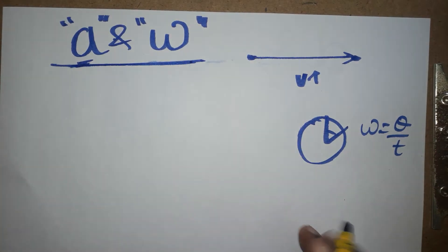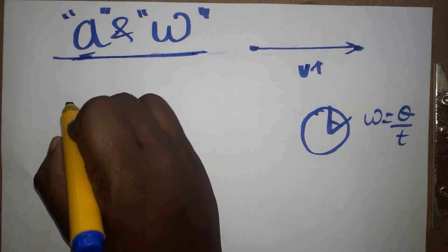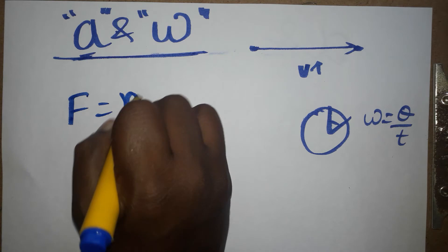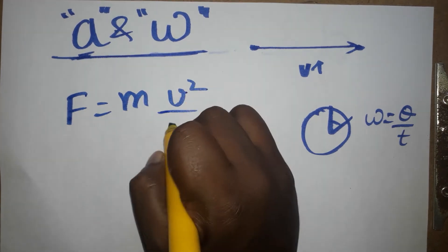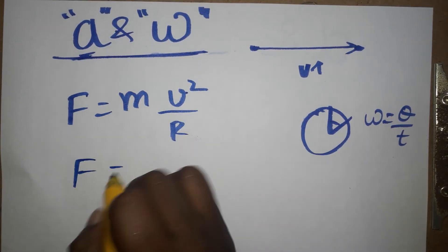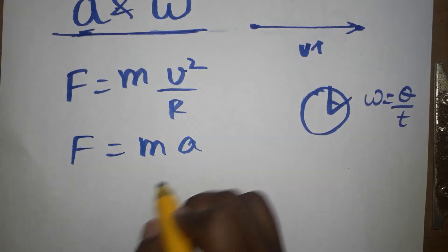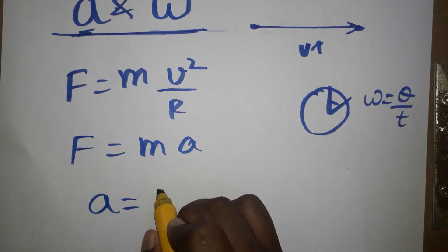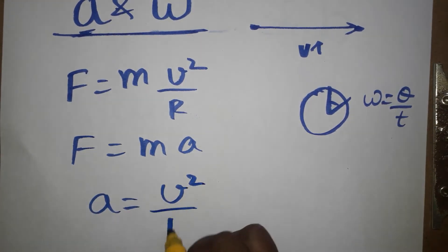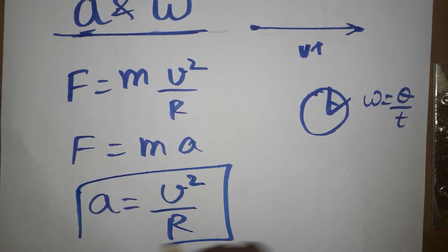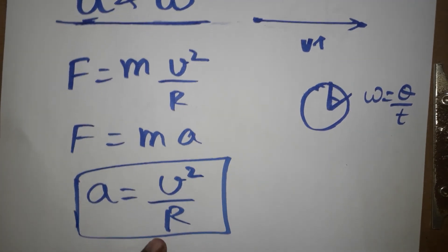We are going to see what is the relation between these two. As we know, centripetal force is equal to mv² divided by r. Since F = ma, that means acceleration a is equal to v² divided by r.